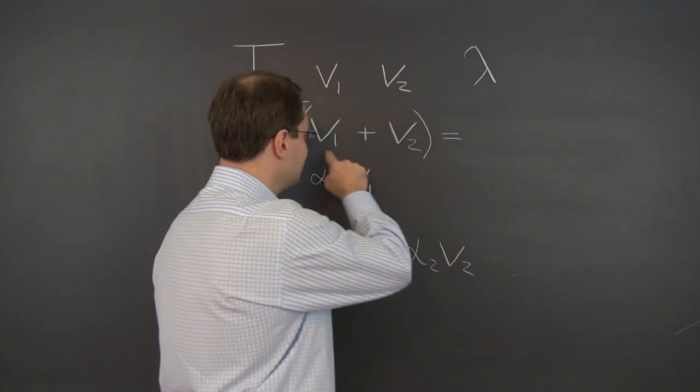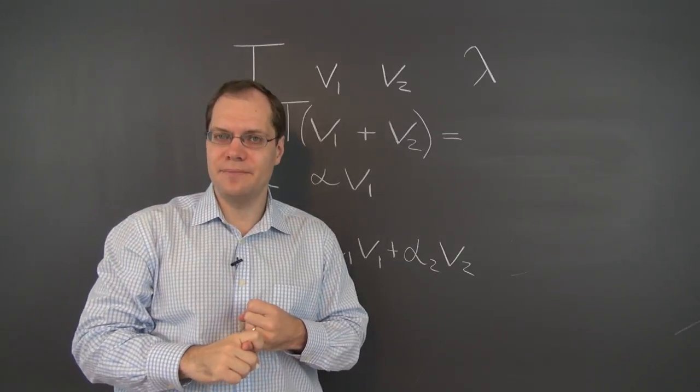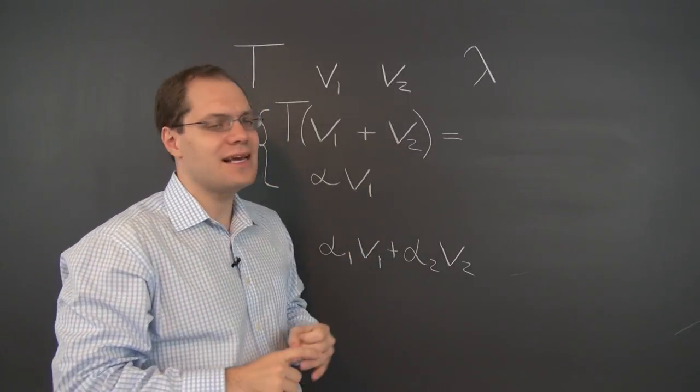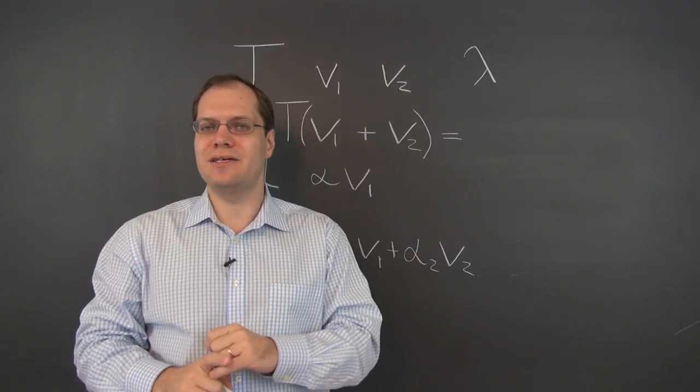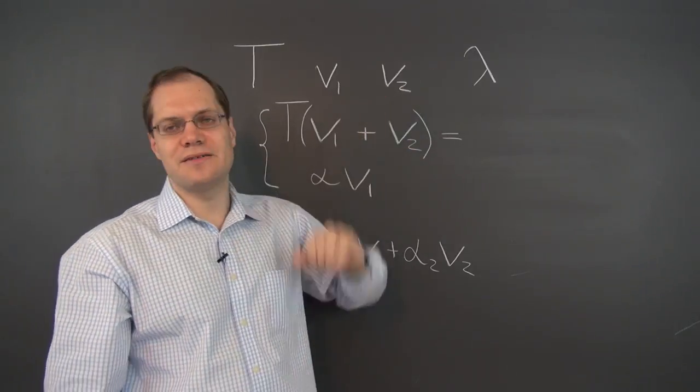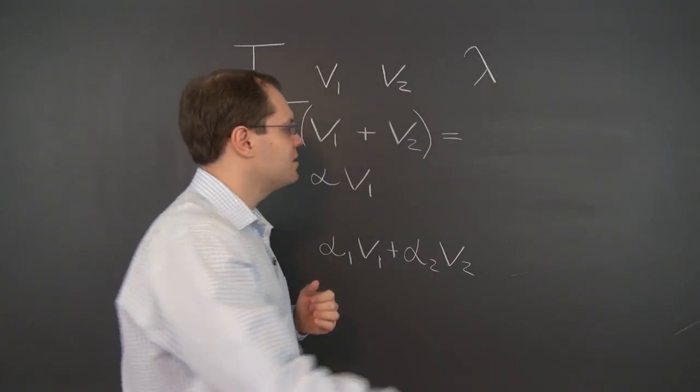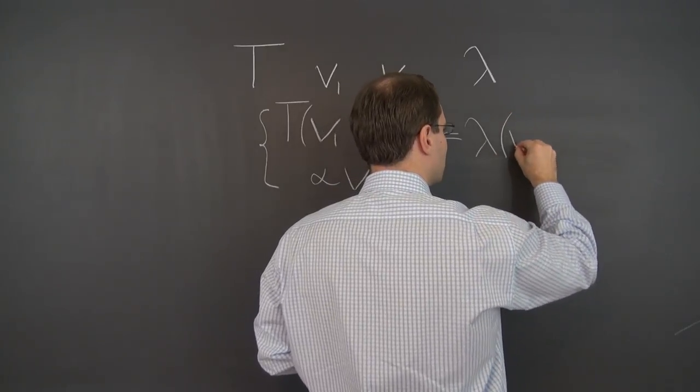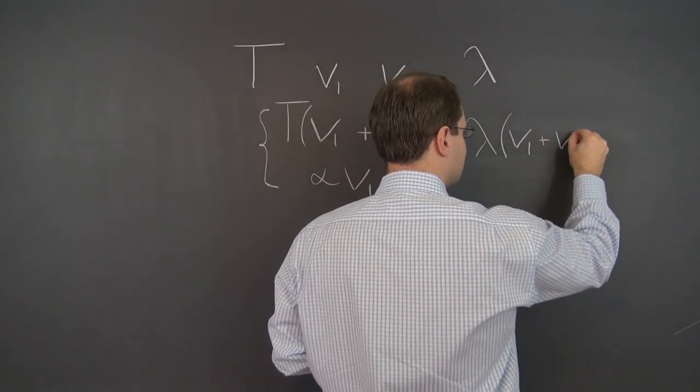And of course the result in the first case will be lambda V1, because V1 is an eigenvector of T, and in the second case it will be lambda, same lambda, V2, because it's also an eigenvector corresponding to the eigenvalue lambda. And so lambda can be factored out, and then in parentheses we have V1 plus V2.